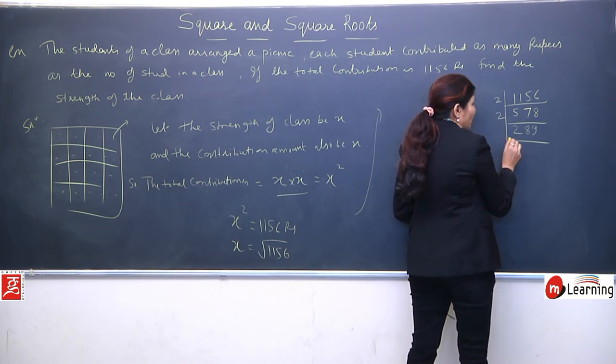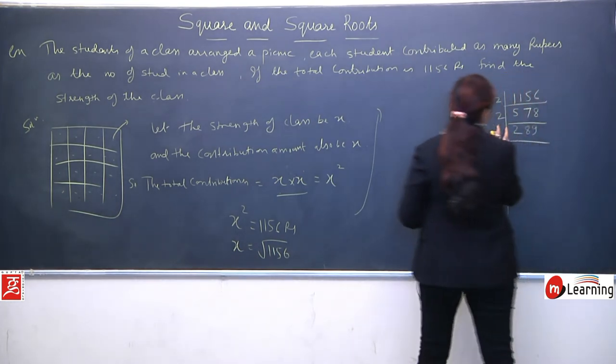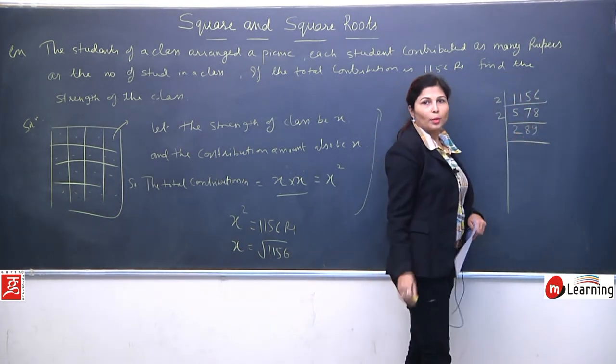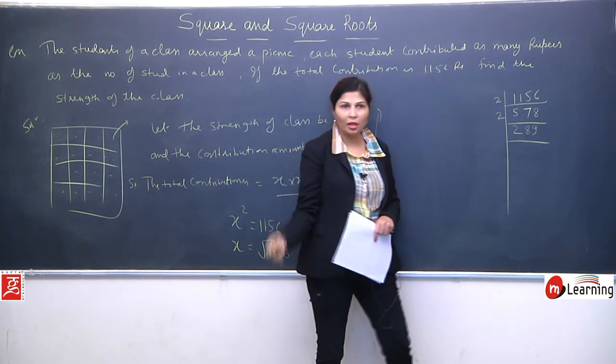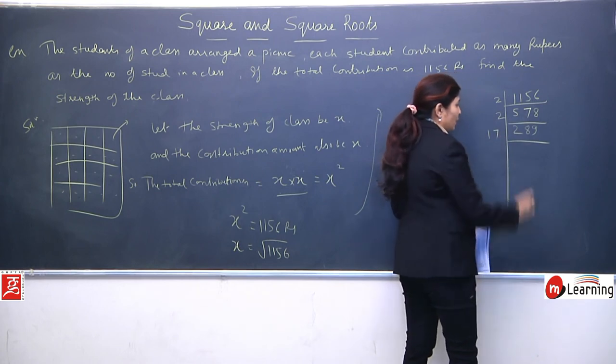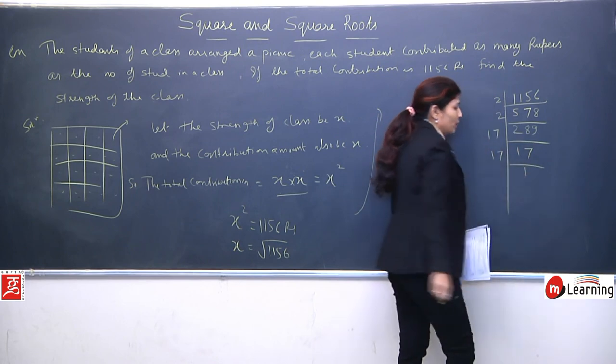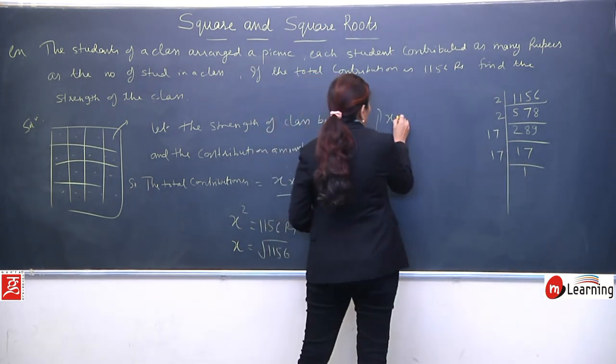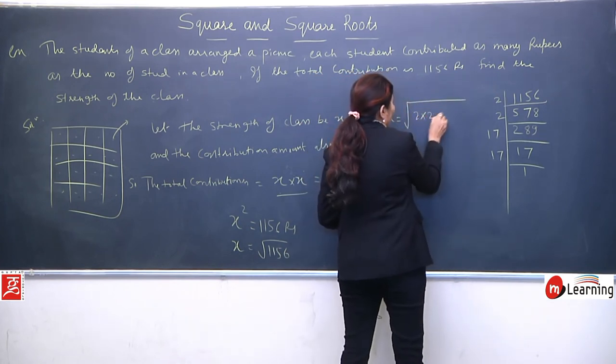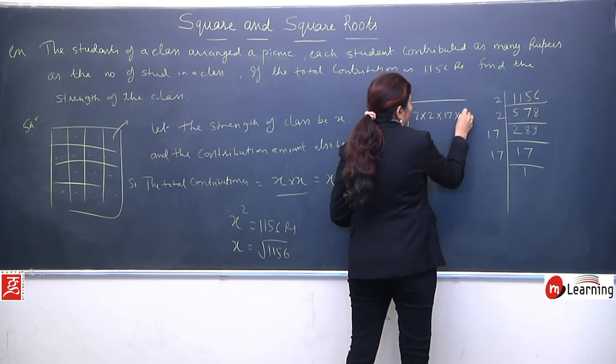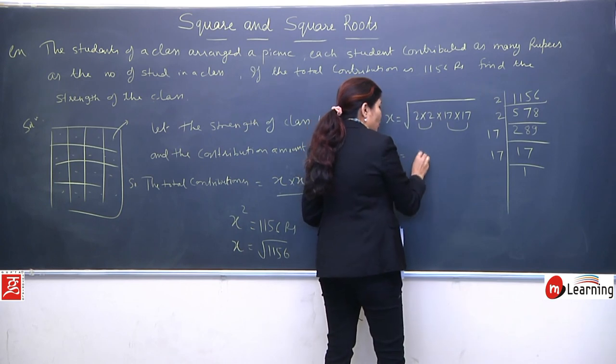This will go by 17, I think it will directly divide by 17. So we have 289. Now 289 is not divisible by 2, not by 3, not by 4, not by 5, we'll try. So finally it will be divisible by 17. 17 seventeens are 289, and 17 ones are 17. So now we have factors of 1156, which equals 2 into 2, into 17, into 17. Now we'll make pairs. Take one 2 out, and take one 17 out. This is our procedure.